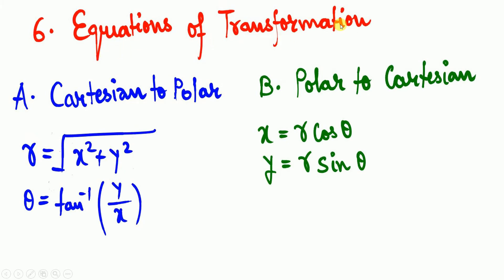The sixth topic covers equations of transformation — converting between the Cartesian system (x, y) and the polar system (r, θ). To convert Cartesian to polar: r equals the square root of x² + y², and θ equals tan inverse of y/x. To convert polar to Cartesian: x equals r·cos θ, and y equals r·sin θ.